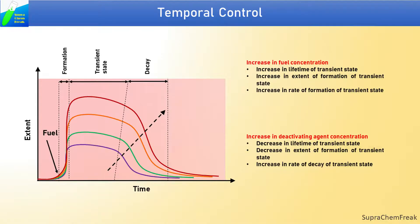The aim of transient supramolecular polymerization is to have complete temporal control over the self-assembly process, defined by the activating and deactivating reactions. An increase in fuel concentration results in an increase in the lifetime, extent of formation, and rate of formation of the transient state. Whereas, an increase in deactivating agent concentration results in a decrease in lifetime, decrease in extent of formation, and an increase in the rate of deactivation of the transient state.